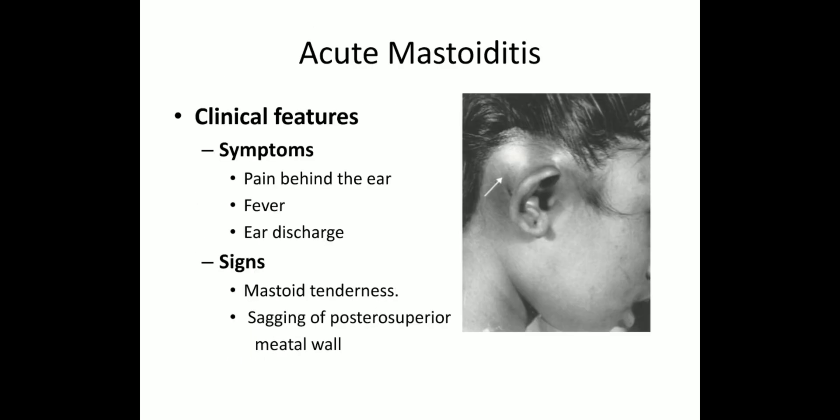Symptoms include persistent pain, increase in intensity or recurrence of pain once it has subsided, persistent or recurrent fever, and persistent ear discharge. Signs include mastoid tenderness elicited by applying pressure over the suprameatal spine, mastoid process, and tip of the mastoid. Pulsatile ear discharge may be seen — known as the lighthouse sign. Even after mopping the discharge it may fill up again — that is called the reservoir sign. There may also be sagging of the posterior superior meatal wall, perforation of the tympanic membrane, swelling over the mastoid, and conductive hearing loss.